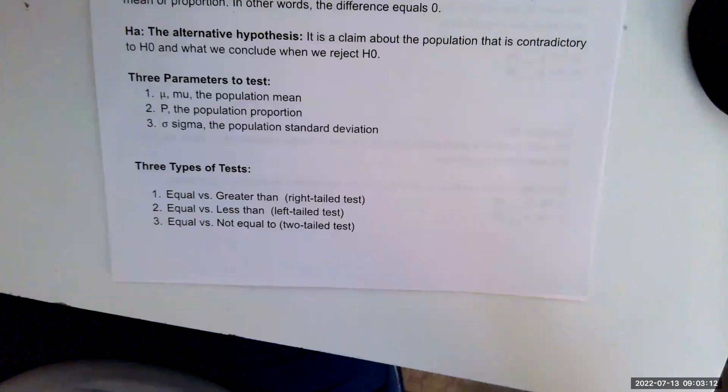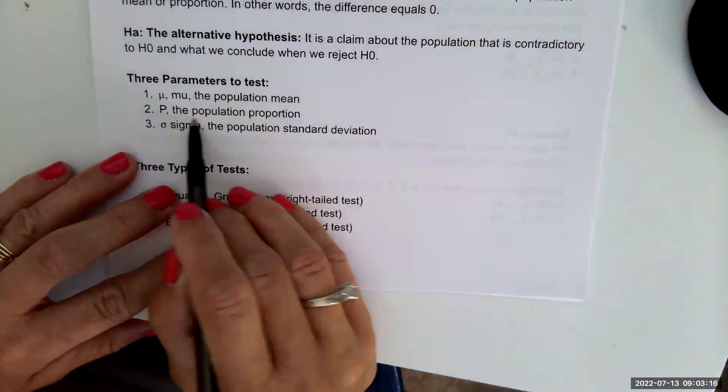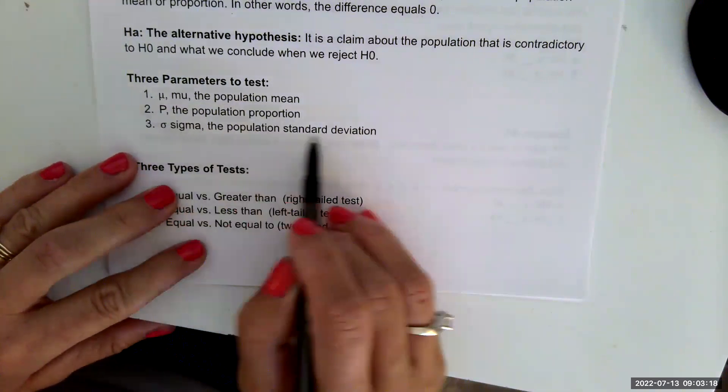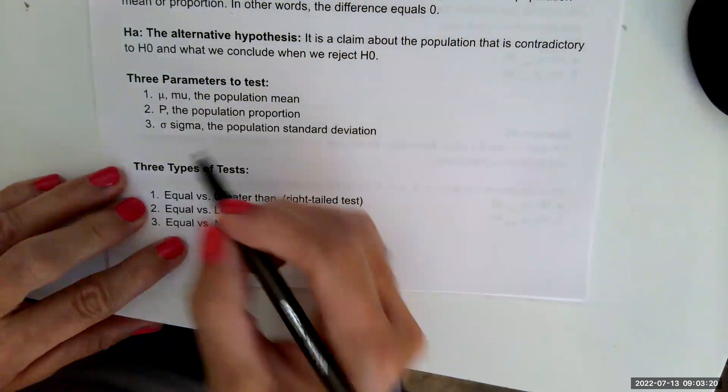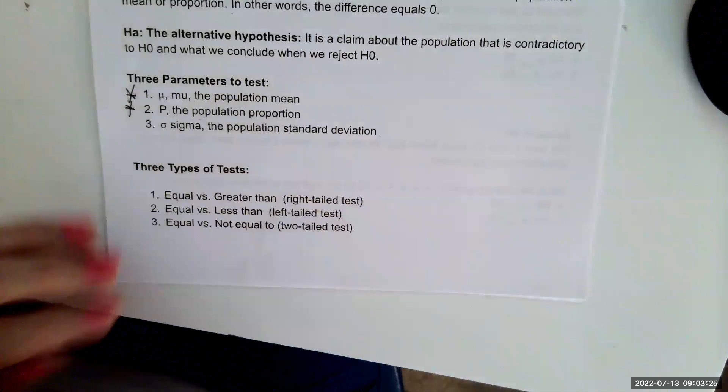There are three parameters that we could test. We could test the mean, the population mean, the population proportion, or the population standard deviation. We are only going to look at these two this semester, the mean and the population proportion.